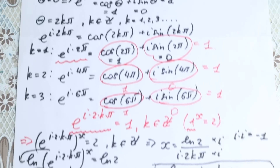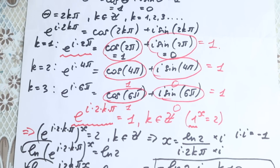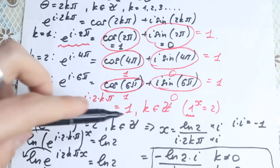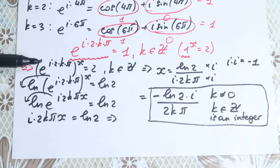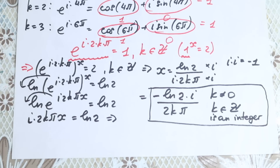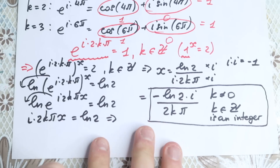Let's recap quickly. There is no real solution — we proved this at the beginning. Using Euler's identity with the substitution theta equals 2k pi, we showed e to the power i times 2k pi equals 1 for any integer k. Substituting into the original equation gives us the complex root x equals negative i times natural log 2 over 2k pi, valid for non-zero integers k. If you have interesting notes, write them in the comments. If you like this video, leave a like. Thank you for your time and have a great day.